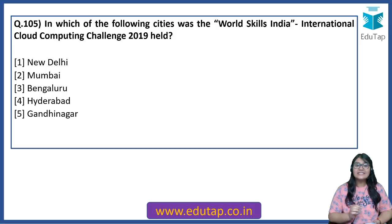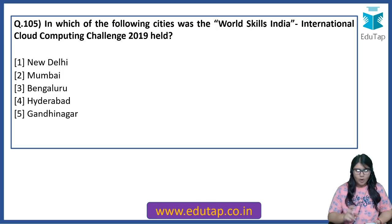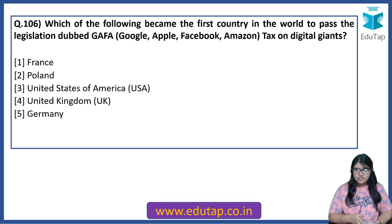In which of the following cities was the World Skills India International Cloud Computing Challenge 2019 held? For Phase 1, whenever there are important conventions, summits, or meetings, the venue is very important. The answer for this particular question is New Delhi.